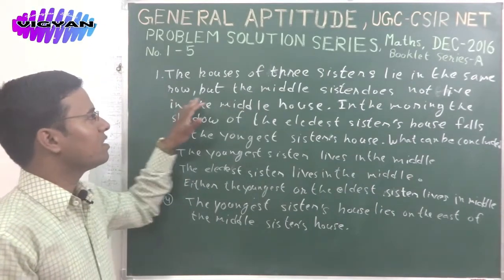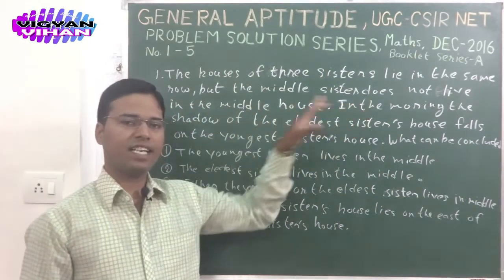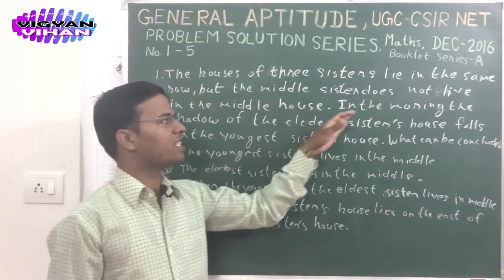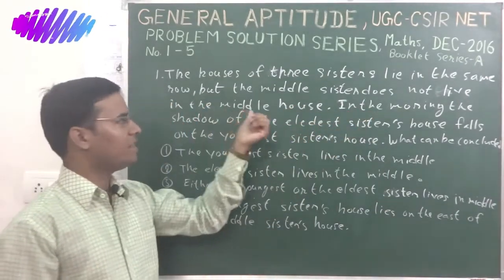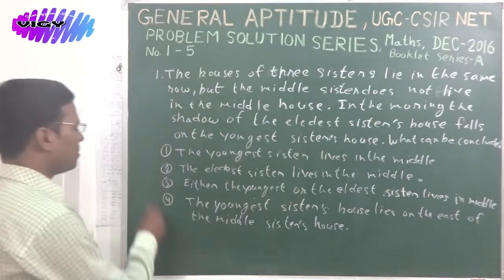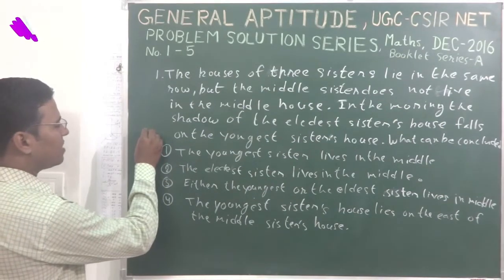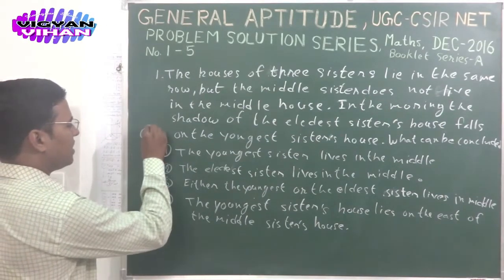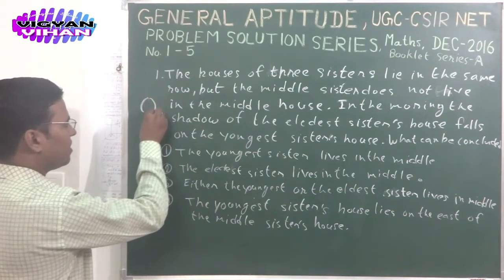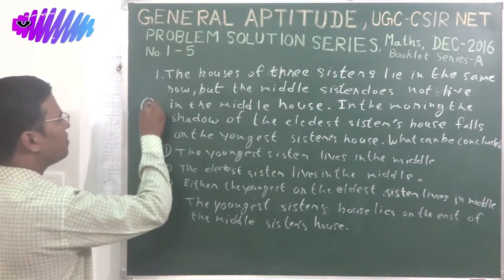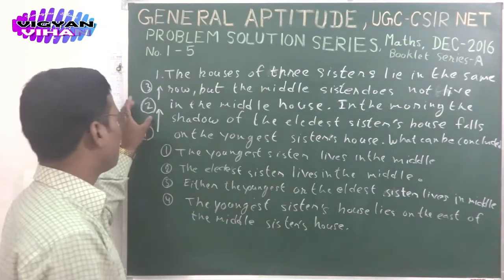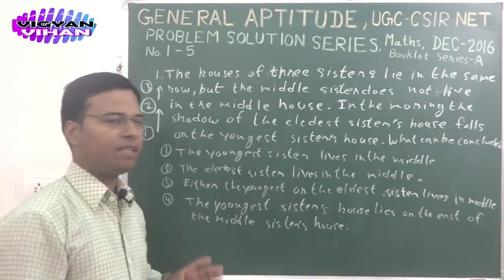In this problem, the houses of three sisters lie in the same row, but the middle sister does not live in the middle house. The middle sister will never live in the middle house. I will arrange the sisters' names: the youngest sister is 1, the middle sister is 2, and the eldest sister is 3. So middle sister 2 will not live in the middle house.